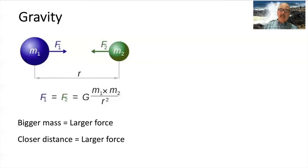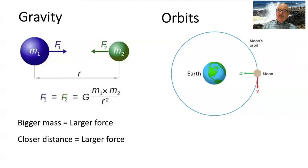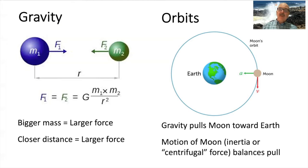We can also talk about the orbit. The moon travels around the earth and the two attract each other — that green arrow there shows how they attract each other. The moon also has a velocity; it is traveling around, and so that momentum of the moon balances out the pull, the force of the earth. It continually falls toward the earth, but it moves around instead of falling into the earth.